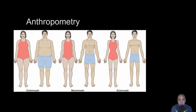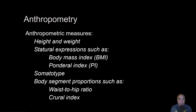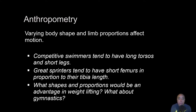Athletes come in all different shapes and sizes, so we need to be cognizant of differences in height, weight, and segmental properties. The discipline that studies these measurements and proportions is known as anthropometry. We take anthropometric measurements such as height, weight, BMI, and somatotype to determine how the anthropometric properties of the system influence its motion. Swimmers tend to have long torsos and short legs; great sprinters tend to have short femurs relative to tibial length — what we call the crural index.